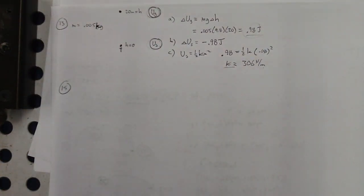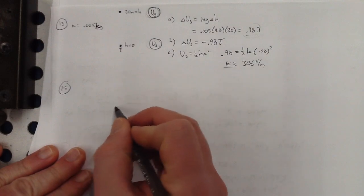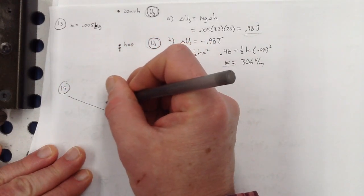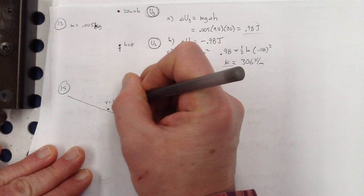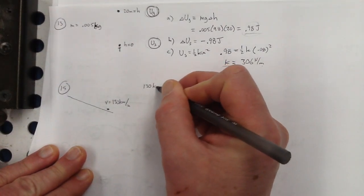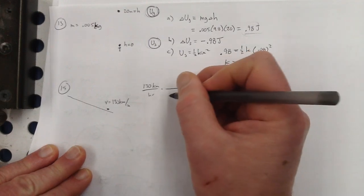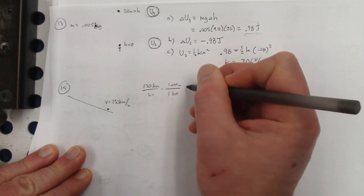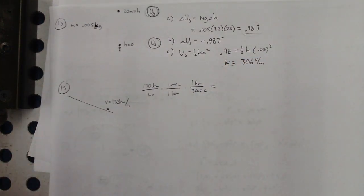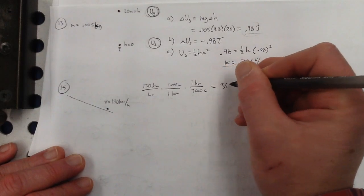Last problem: a runaway truck with failed brakes moving downgrade at 130 kilometers per hour. I'll convert that to meters per second: 130 times 1000 divided by 3600 — that's about 36 meters per second.